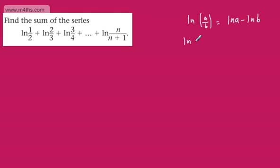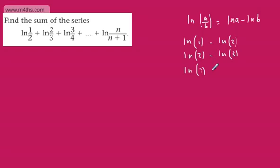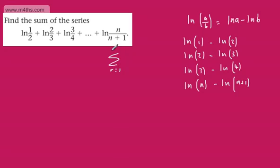So if we consider what we've got on the first bit, quite clearly this is the natural log of 1 minus the natural log of 2. Then on the next bit, we've got the natural log of 2 minus the natural log of 3. And then the next one, we've got the natural log of 3 minus the natural log of 4 — right the way up. Remember we're taking R from 1 to N, so we've got the natural log of N minus the natural log of N plus 1.